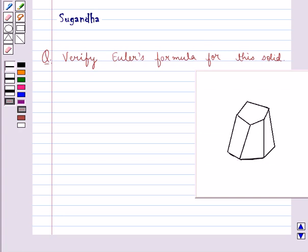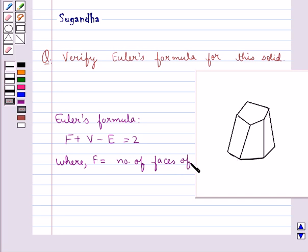First let's see what Euler's formula is. Euler's formula is F plus V minus E equals 2, where F is the number of faces of the polyhedron.